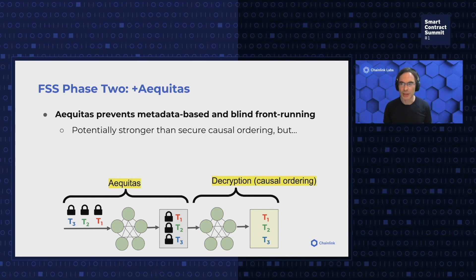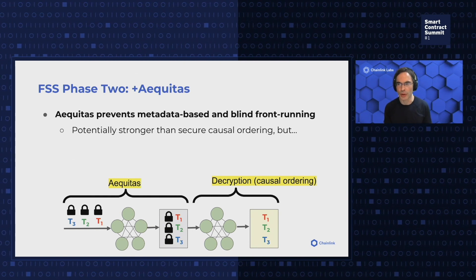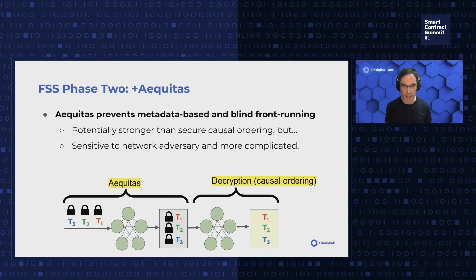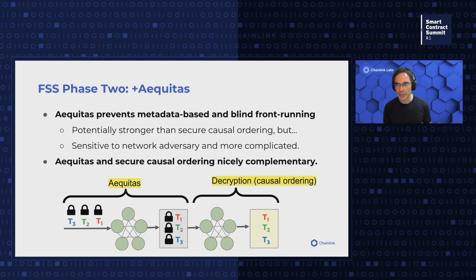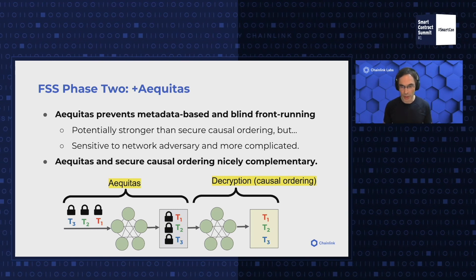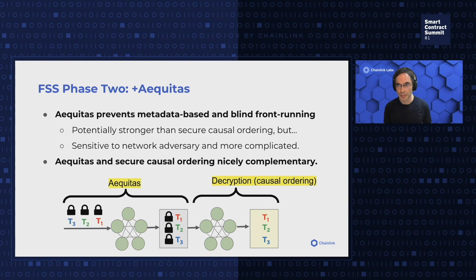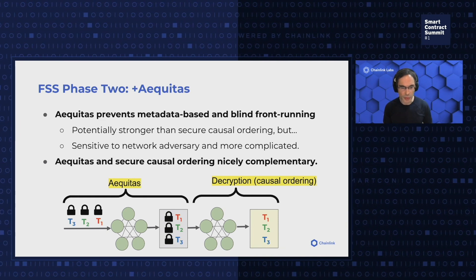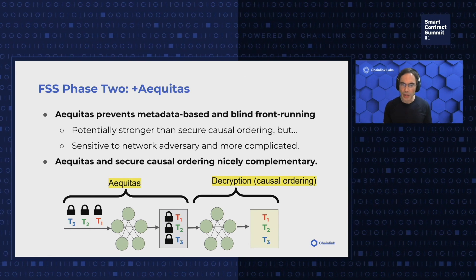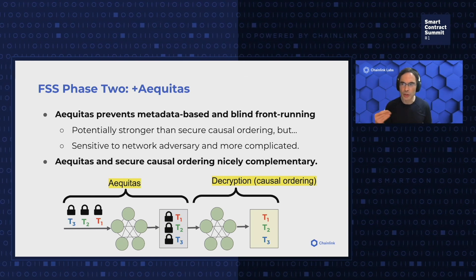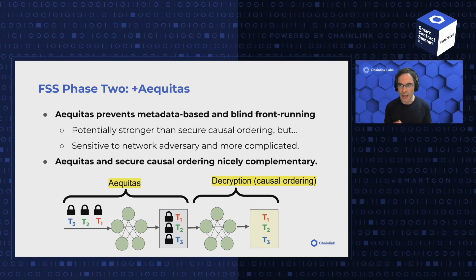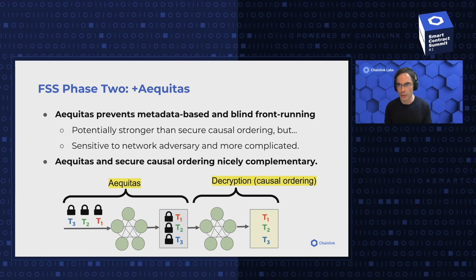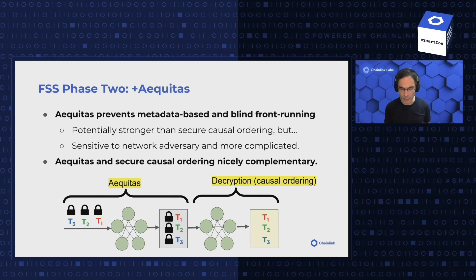ICOITAS does have a limitation: it's sensitive to network adversaries and somewhat complicated to implement. On the other hand, ICOITAS is in principle, when working well, stronger than secure causal ordering. If things go well, ICOITAS gives you exactly the type of transaction ordering you're after. If ICOITAS fails, by also implementing secure causal ordering we ensure there's a strong backstop. So if a network adversary is able to manipulate transaction ordering and bypass the security properties of ICOITAS, secure causal ordering still presents a barrier to manipulation of user transactions.